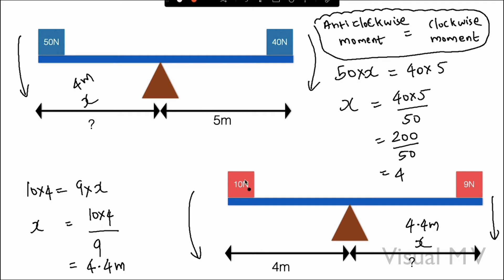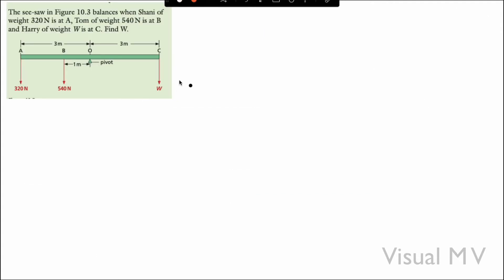This is the concept — you just need to know the equation: anti-clockwise moment equals clockwise moment. Now let us solve one more question. The seesaw in figure 10.3 balances when Shiny of weight 320 Newton is at A, Tom of weight 540 Newton is at B, and Harry of weight W is at C. Find W.